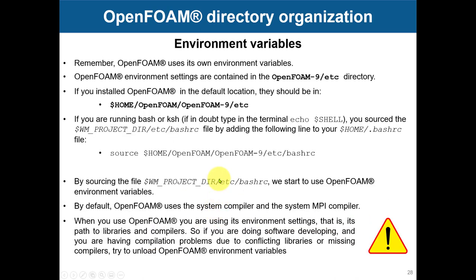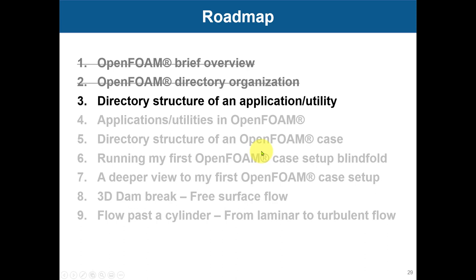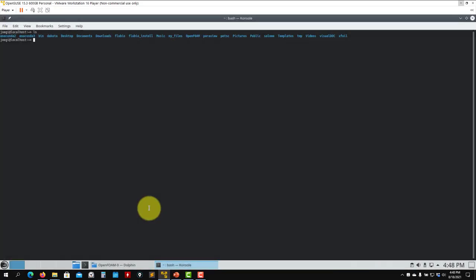Moving to the etc directory — as I showed in the bash video, your bashrc file is where you have your user environment definitions. But OpenFOAM also has its own environment variables, and you'll find everything in this directory. There's a bashrc file specific to OpenFOAM that is loaded automatically. You don't usually need to modify it, but you can open it and take a look if you're curious. That covers the directory organization — now let's look at the directory structure of an application or utility.